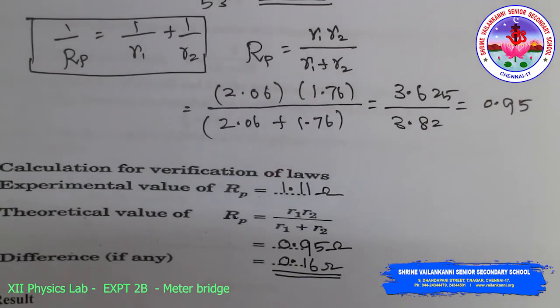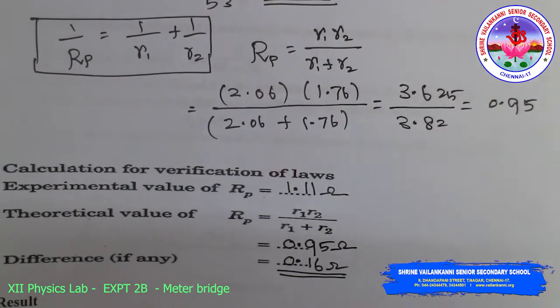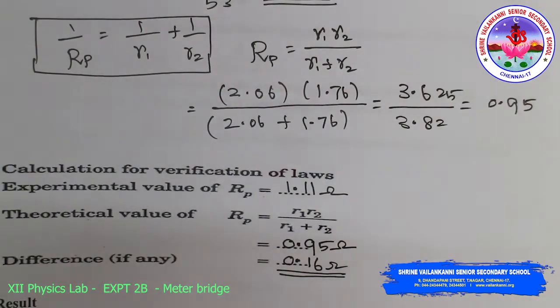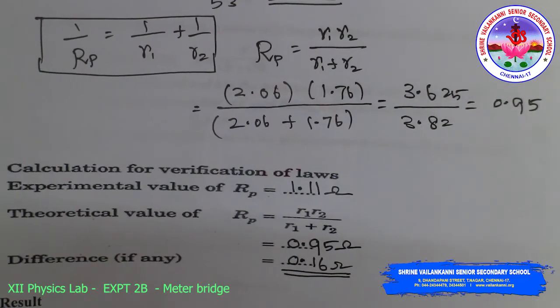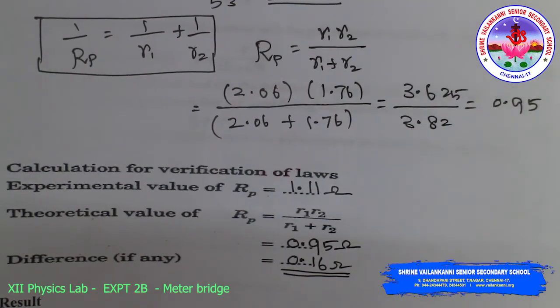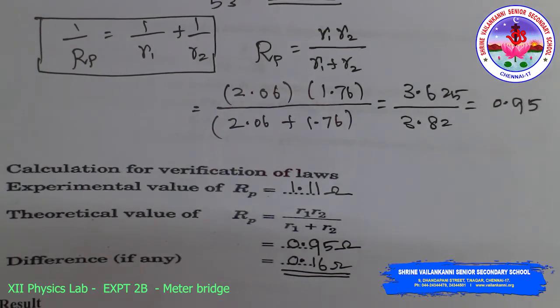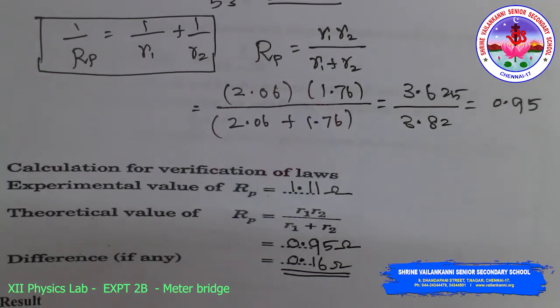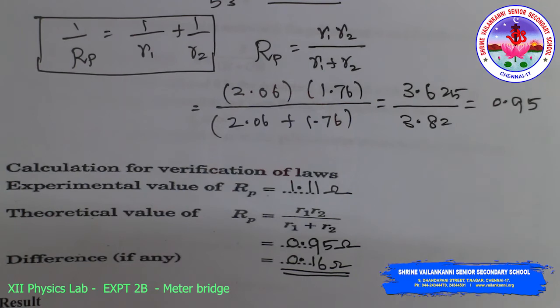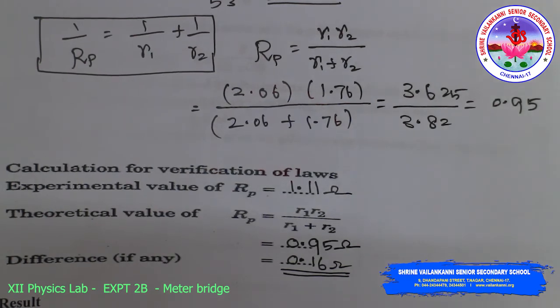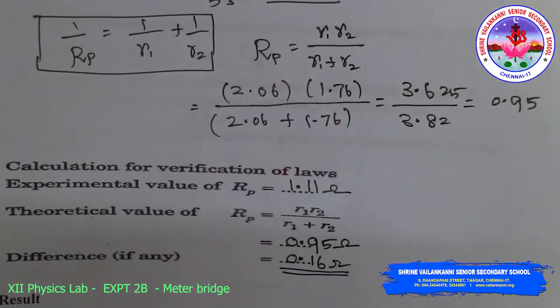To know the theoretical value of resistance in parallel, by applying the formula 1 by Rp equals 1 by R1 plus 1 by R2, we know that. So Rp equals R1 R2 by R1 plus R2. By applying that value, we got 0.95 ohms. So we can verify it.